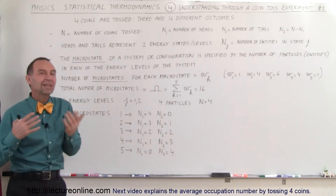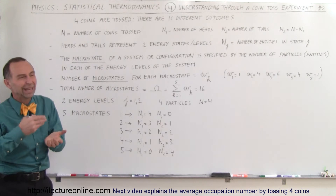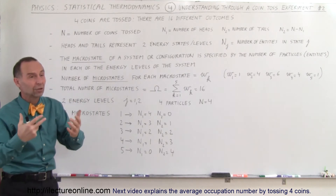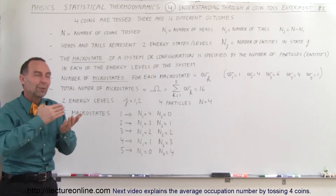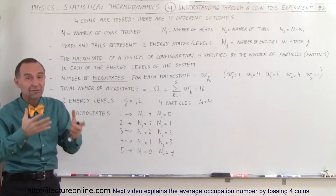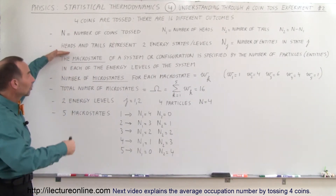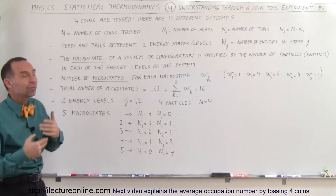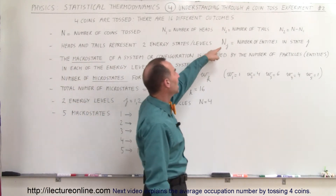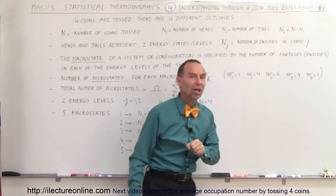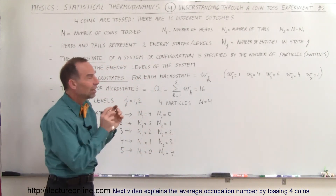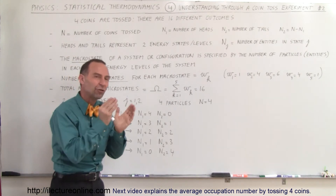Heads and tails here are simply a representation of two energy levels. With coins, heads and tails are not really energy levels — they're just a representation of larger systems we'll look at later where the numbers are astronomically high. Typically when we have a large number of entities, they fall in different energy states. We let n sub j be the number of entities in state j, where j is 1 or 2.